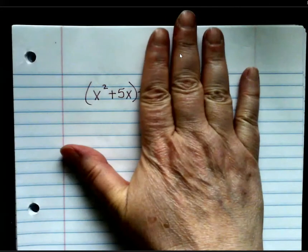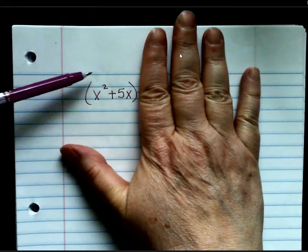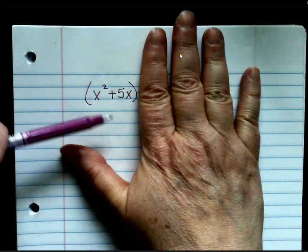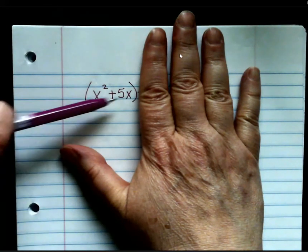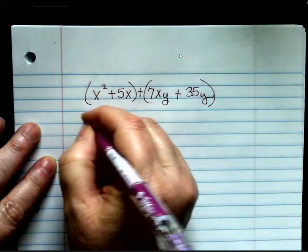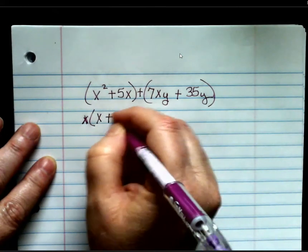Now, I'm going to only look at this one right here. Can I take something out of x squared and 5x? I can't take out a number, but I can take out a letter. And what, how big of a letter can I take out? X. So, I'm going to take, I'm just looking at this one. I'm going to take out an x and I have x plus 5 left.